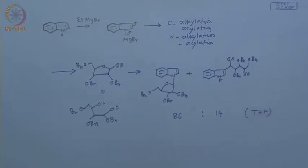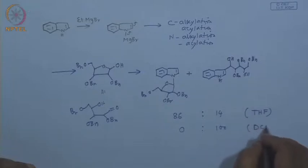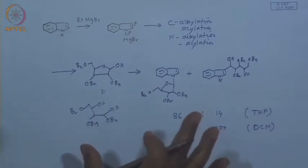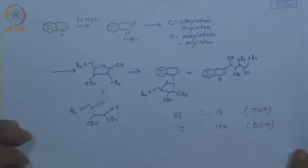By choosing this example, I would like to say that organometallic reactions are very sensitive to reaction conditions — temperature as well as solvent. If the same reaction is carried out in DCM, dichloromethane, you get exclusively the C-product. That means, if you are handling an organomagnesium compound with an ambident nucleophile, the ratio of products can be changed by changing the reaction conditions.